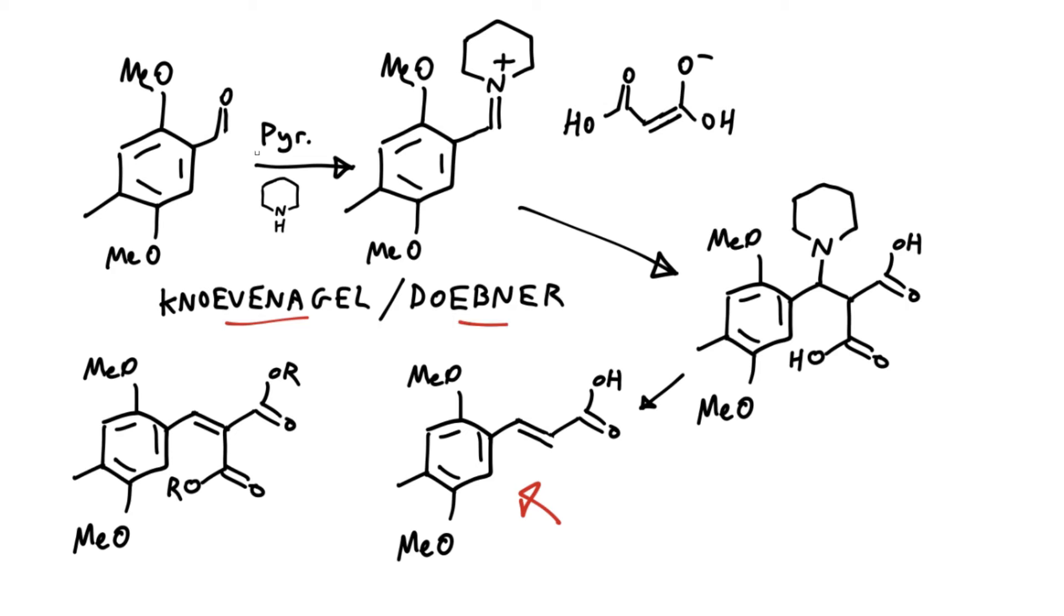What's happening is, firstly, you'll presumably get some sort of iminium adduct of the piperidine into the benzaldehyde here, and then that'll be attacked by the enolate of malonic acid to give you an intermediate here. Normally when we think about the Knoevenagel condensation with something like diethylmalonate, you'd expect a diester product like this.